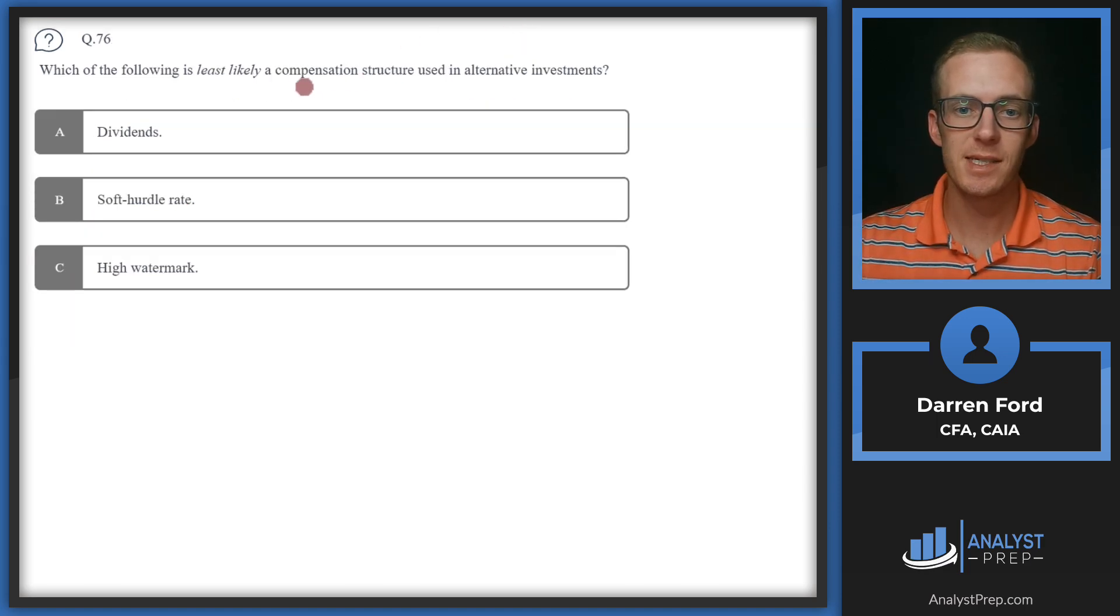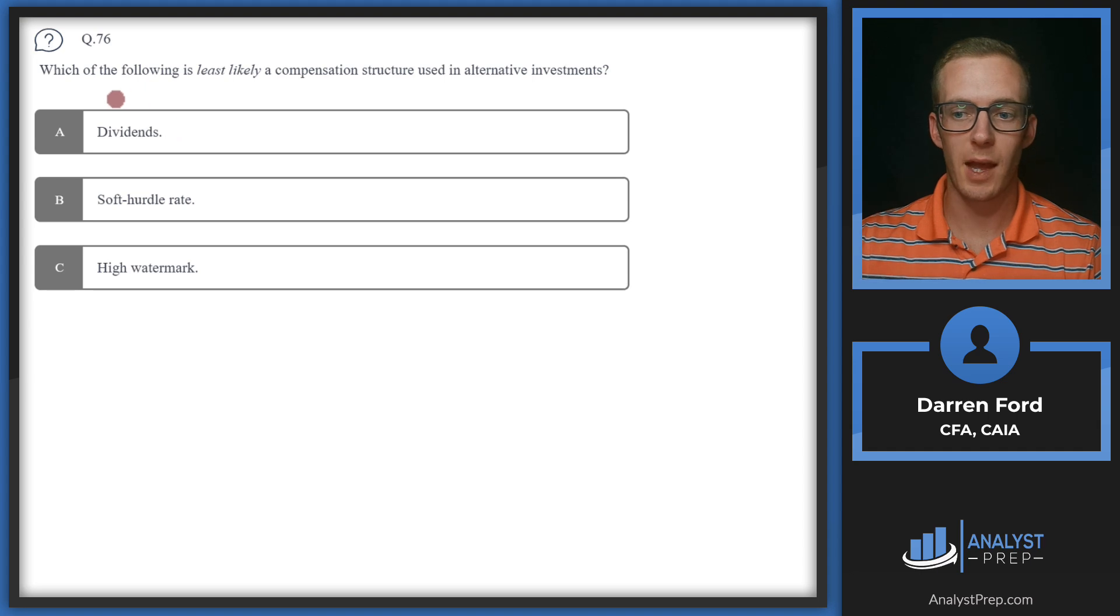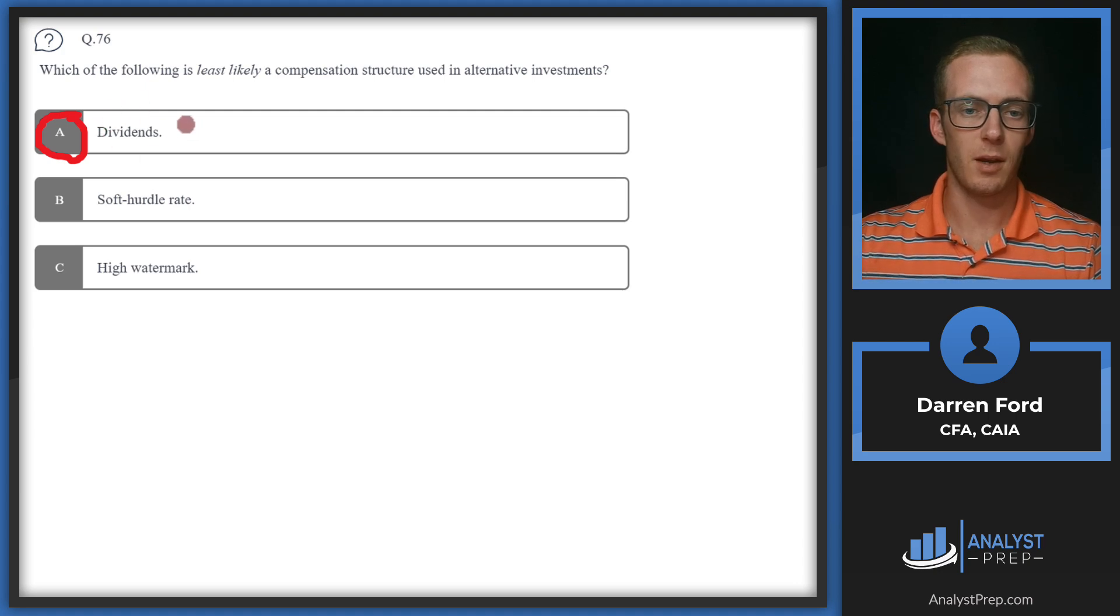Question 76: Which of the following is least likely a compensation structure used in alternative investments? Two of these are going to be compensation structures and one will not. A: Dividends. This seems like it's probably going to be our answer right off the bat. It's generally not a type of compensation structure that would be used in alternatives. This is going to relate more to traditional investments and payouts to shareholders.